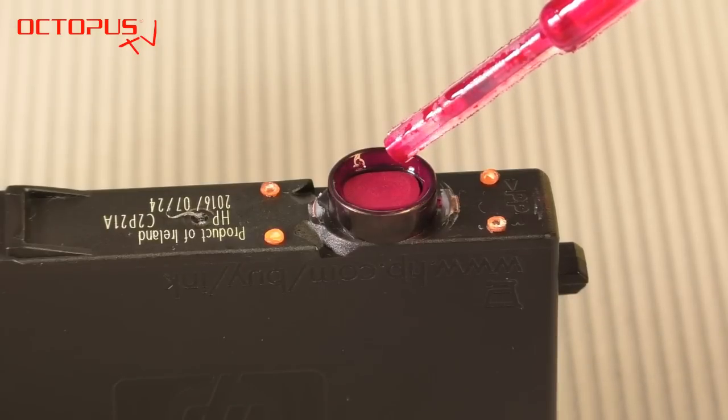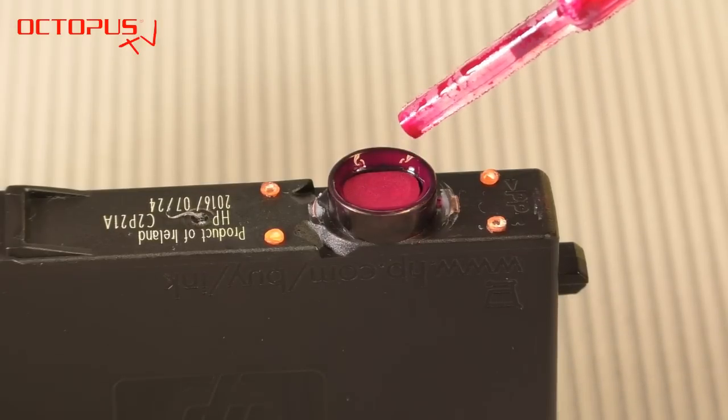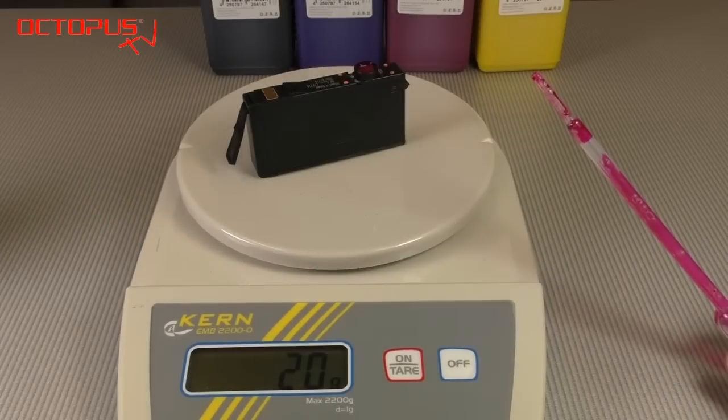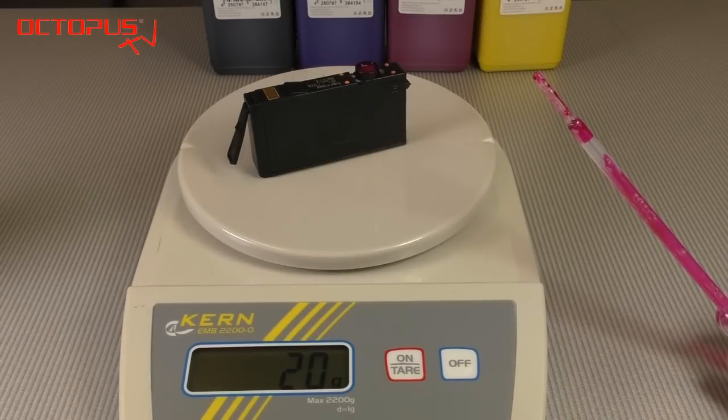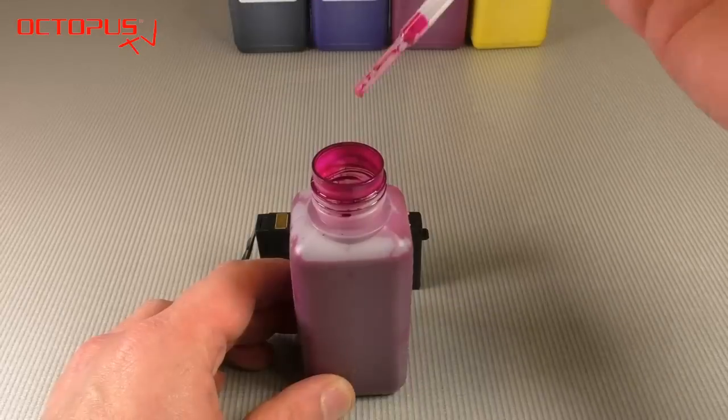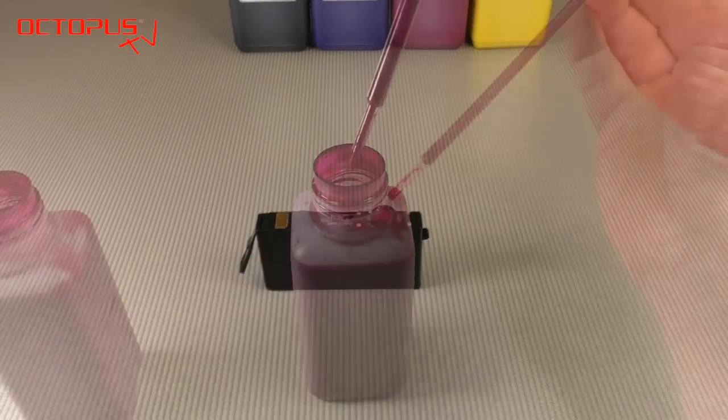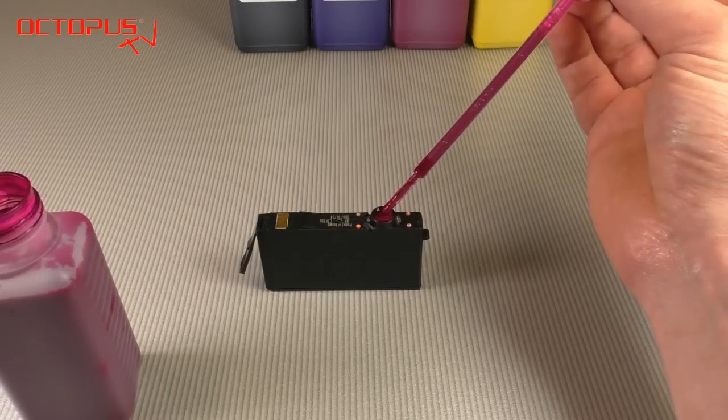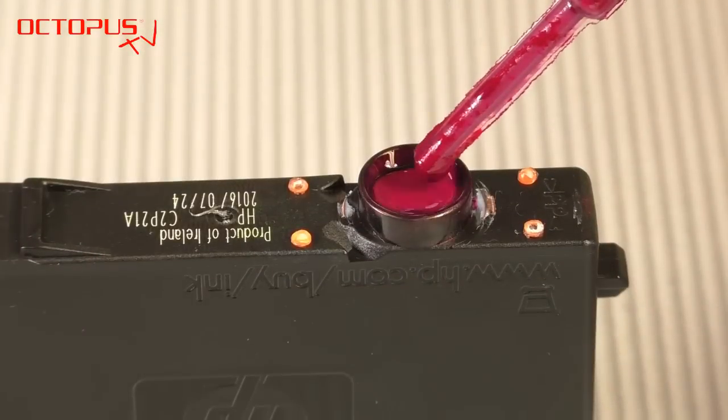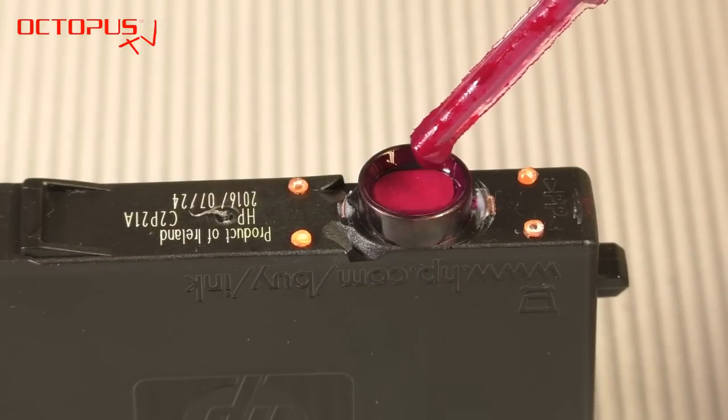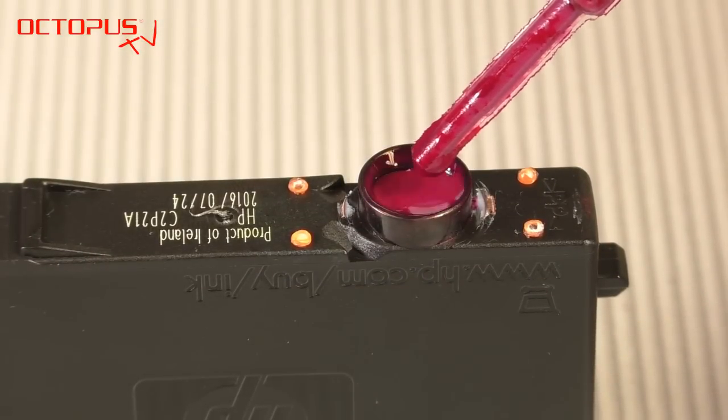The first ml of refill ink has been filled into the cartridge and we take a quick check on the scale. You can see that we have reached 20 grams. So not everyone has a letter scale available but you can also use that dripping method to refill your HP 934, HP 935 cartridges.